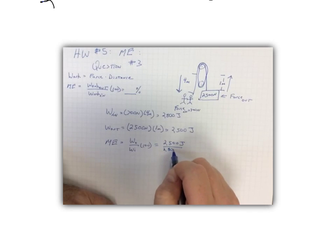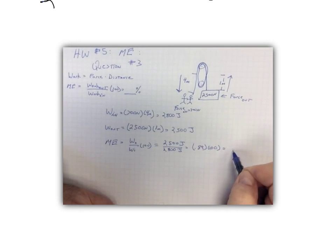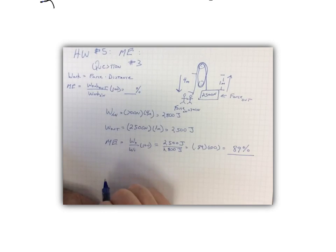I did the calculation ahead of time so I know it's 0.89. I still have to multiply by 100 to convert it into a percent. So that means that this double pulley system is 89% efficient.